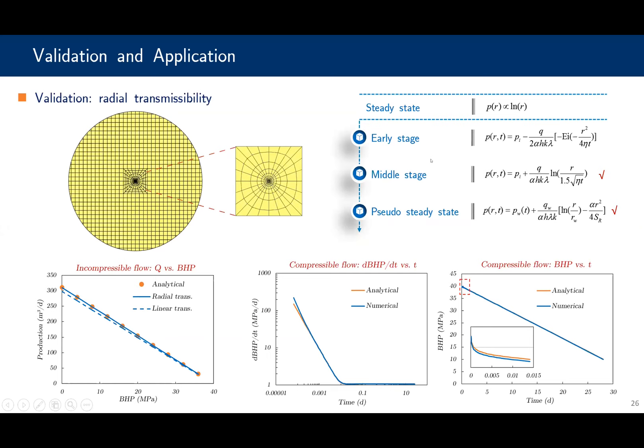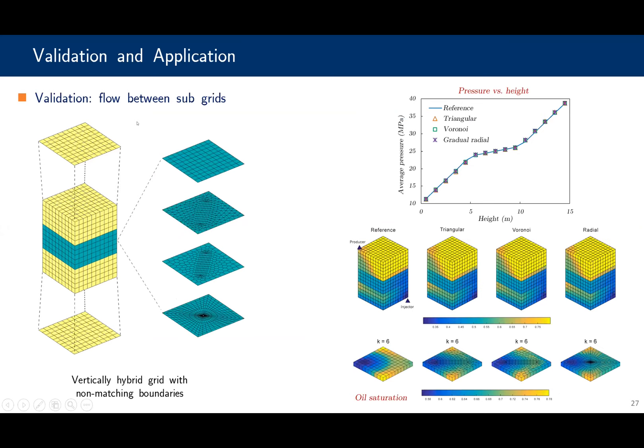Next is the flow between subgrids. We build a hybrid grid where the middle layers are Cartesian, triangular, Voronoi, and radial grids respectively, and the upper and lower layers are Cartesian grid cells. Non-matching faces are formed for these three subgrids. We can see that the results match well with the reference, including the pressure versus height and the oil saturation.